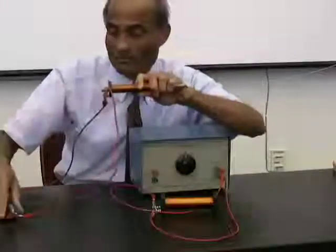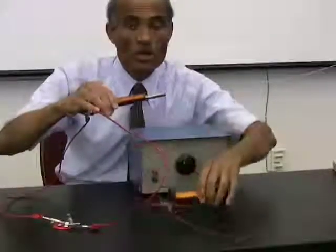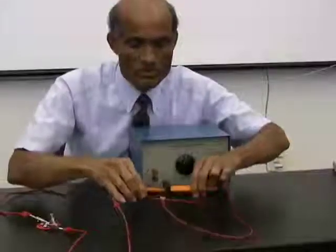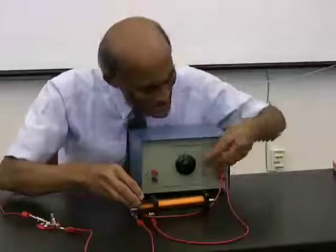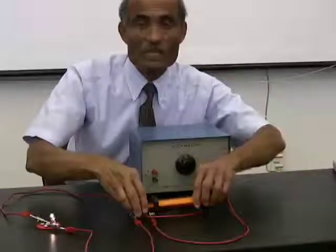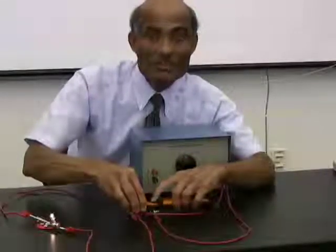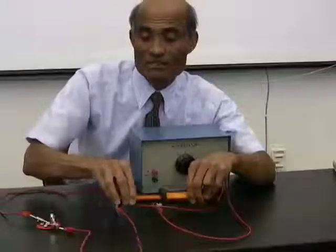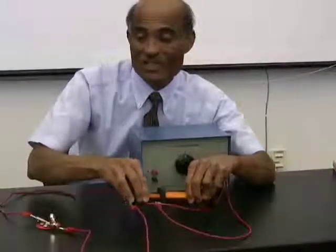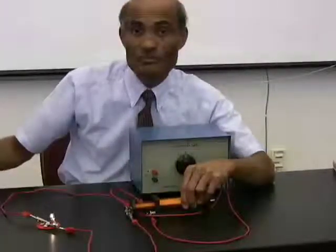I have connected the secondary coil to a light bulb, which will indicate if there is a current. This is the primary coil, connected to an AC supply. When I insert the secondary coil, the light bulb lights up — the continuously changing magnetic field produced by the AC is actually inducing an EMF. If I withdraw the secondary coil, the magnetic flux linked with it decreases and the induced EMF also decreases. This is the principle of a transformer.